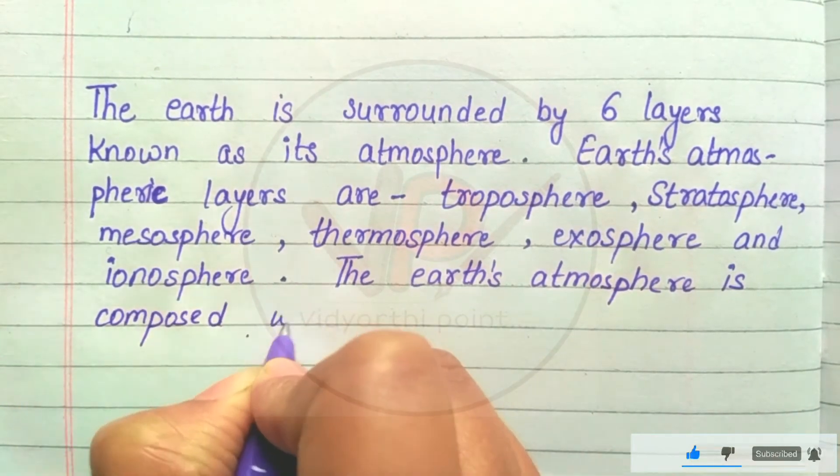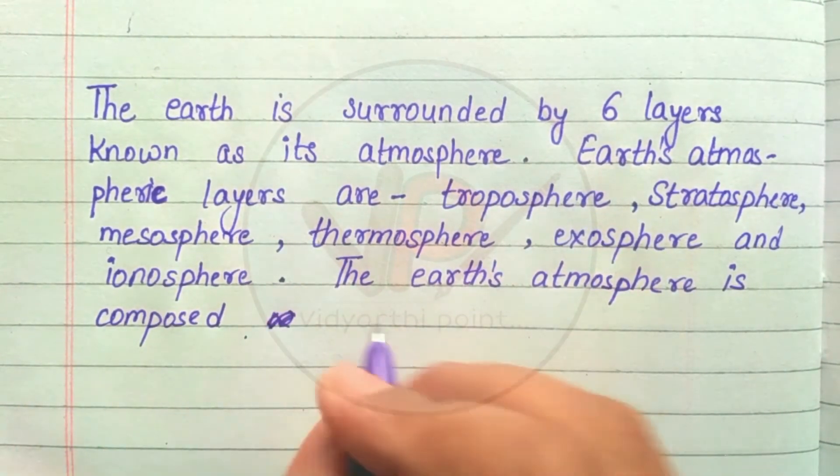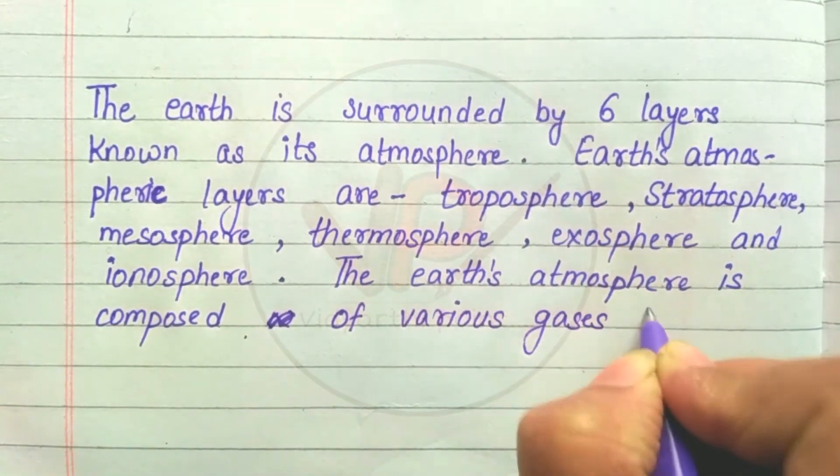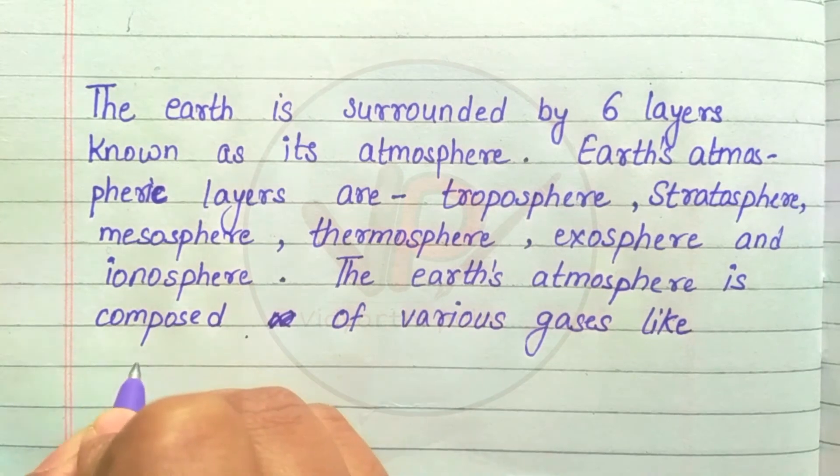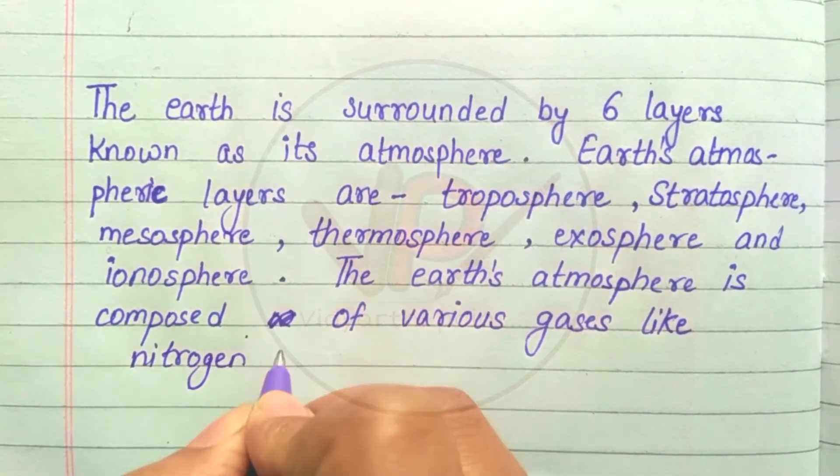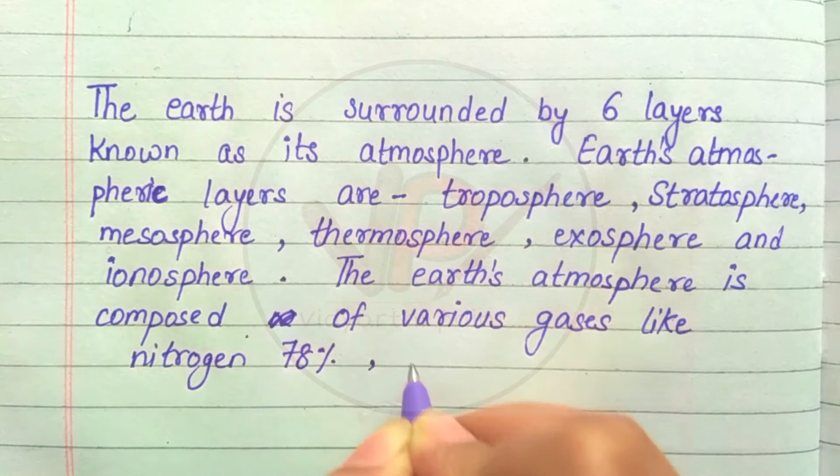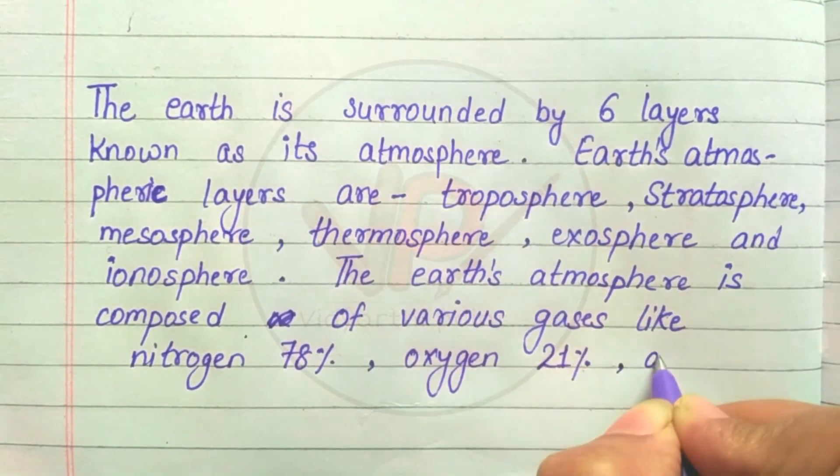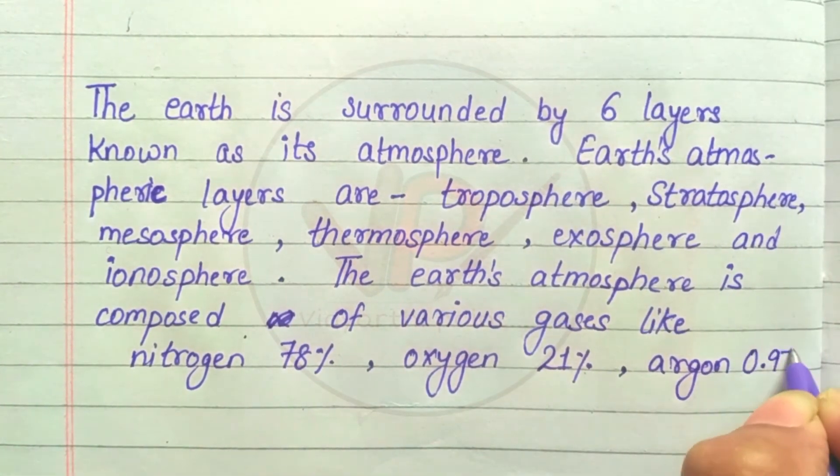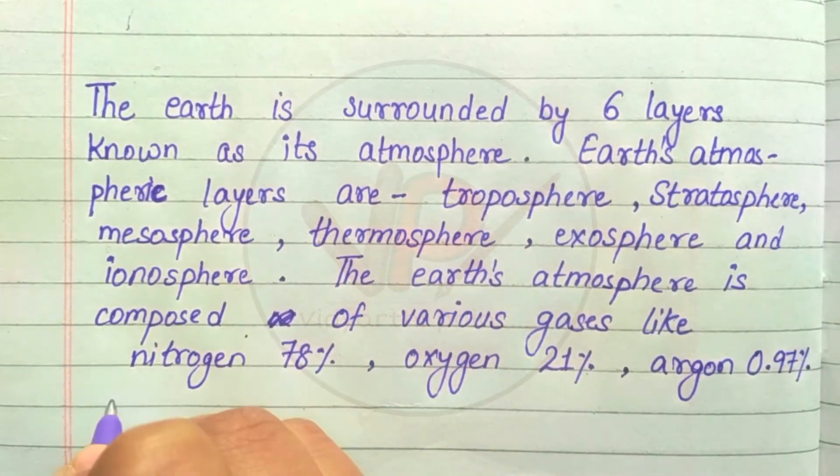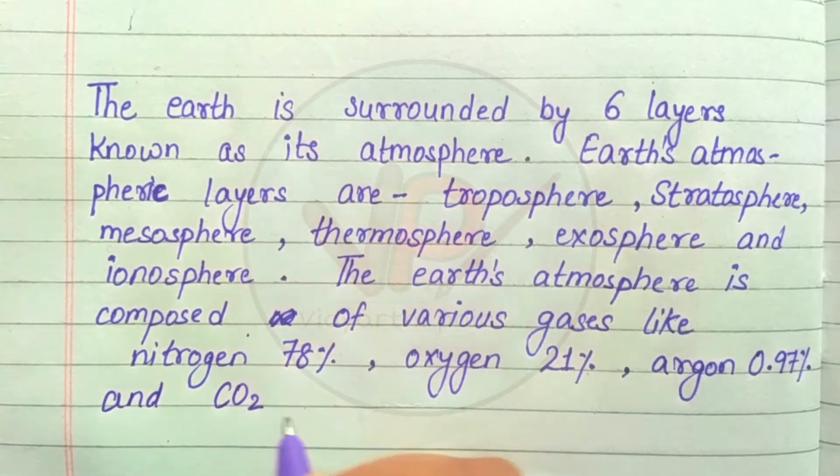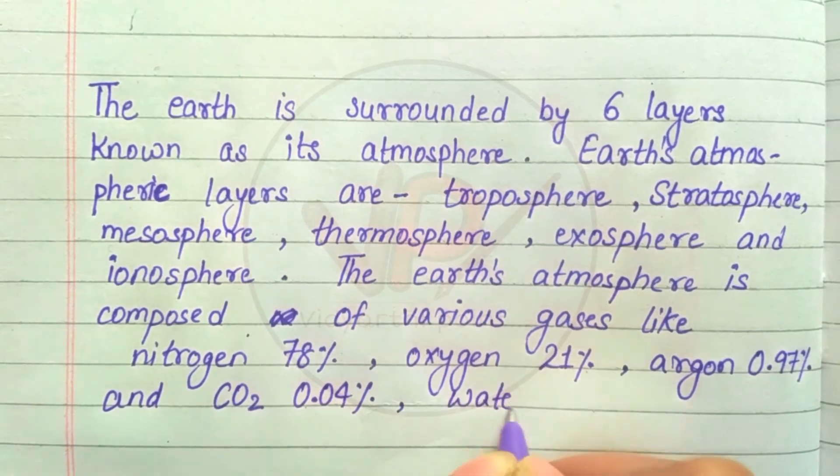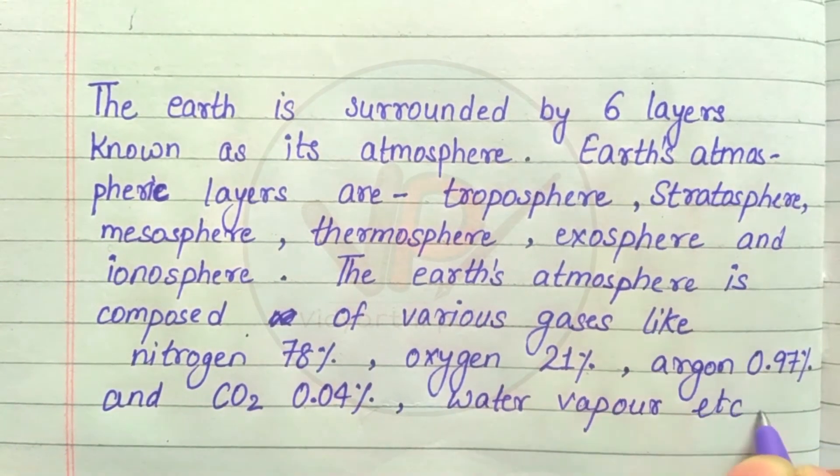The Earth's atmosphere is composed of various gases like nitrogen 78%, oxygen 21%, argon 0.97%, and CO2 0.04%, water vapor, etc.